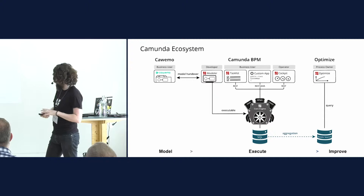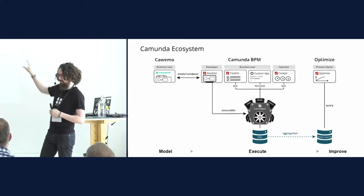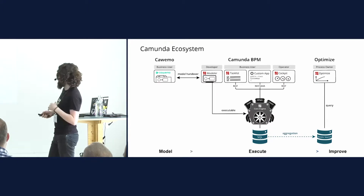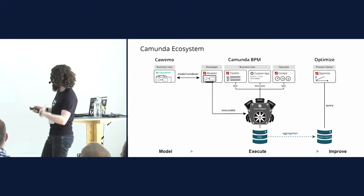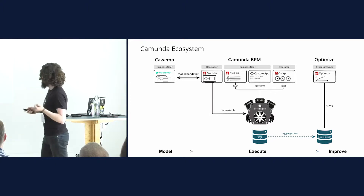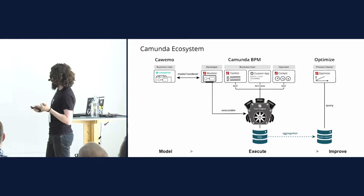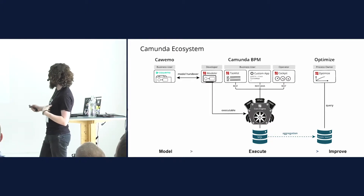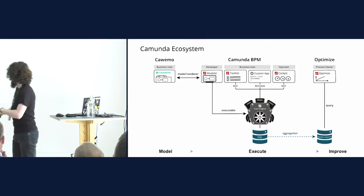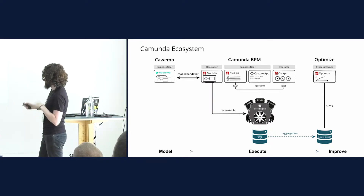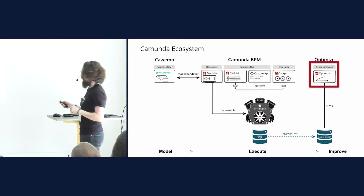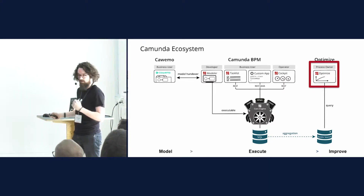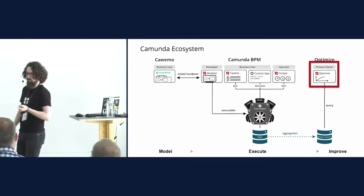First of all, this is a much nicer picture than Jakob showed about the ecosystem. We have here Kavima, which is the modeling and modeler stuff. We also have a developer tool, the actual desktop modeler. The engine itself then connects to these three tools here, which again is in production. All this data has been produced, it's put into Elasticsearch, and this tool is going to actually help us visualize that.